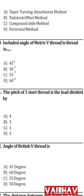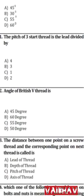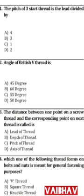Question 41: The pitch of a 3-start thread is lead divided by 3 — answer is B. Question 42: The angle of British Whitworth V-thread is 55 degrees — answer is C — 55 degrees.